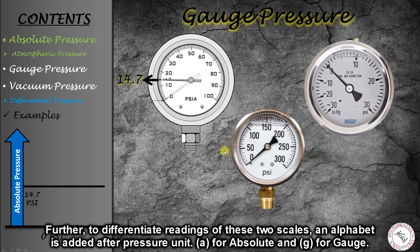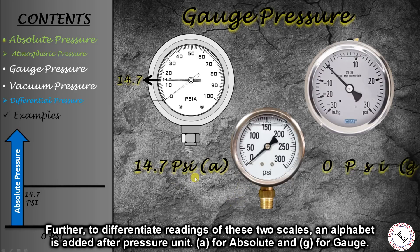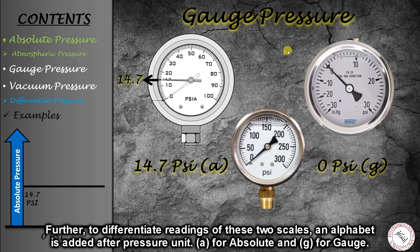To differentiate between the two scales, a letter is added after the pressure unit. If 'A' is added, it means the reading is on the absolute pressure scale — for example, psia. If 'G' is added, it means gauge pressure scale — psig. From this, we know that 14.7 psia is equal to 0 psig.